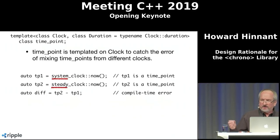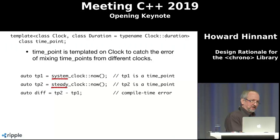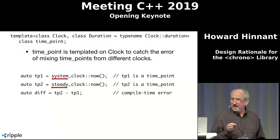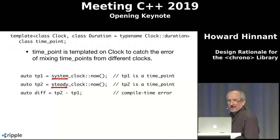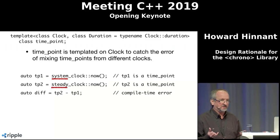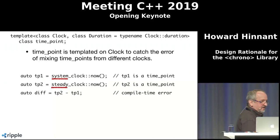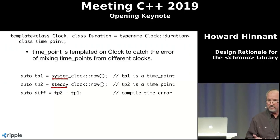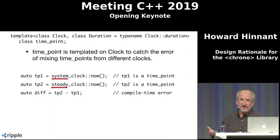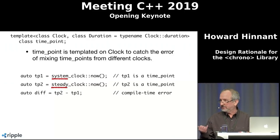Time point is templated on duration, so it can have any precision — nanosecond, seconds, etc. Time points are also templated on the clock they measure time from. This catches logic errors at compile time: if you have two time points from different clocks, like system_clock and steady_clock, those clocks count from different epochs. Subtracting them would give garbage at runtime. So Chrono makes it a compile-time error to subtract time points based on different clocks.